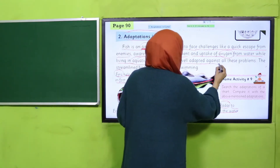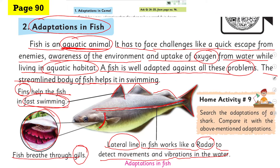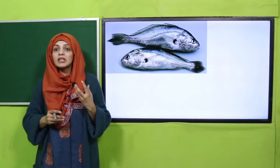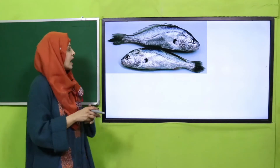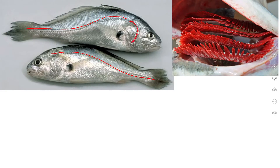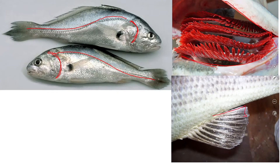A fish is well adapted against all these problems. The streamlined body of the fish helps it in swimming — yeh jo machli ki shape hai yeh streamlined hai, aur yeh shape machli ko tezi se teherne mein madad deti hai. Now I will show you clear pictures of fishes so you can easily look at the adaptations. First, you can see the lateral line — yeh fish ka radar hai jo paani mein movement detect karta hai. Then comes the gills — yeh is side par hote hain, aur agar aap fish ki flap ko open karein to yeh gills nazar aayenge which help it in breathing underwater. Then come the fins which help it swim fast.